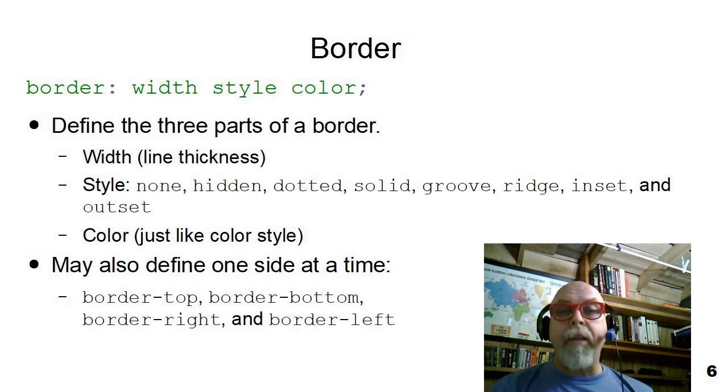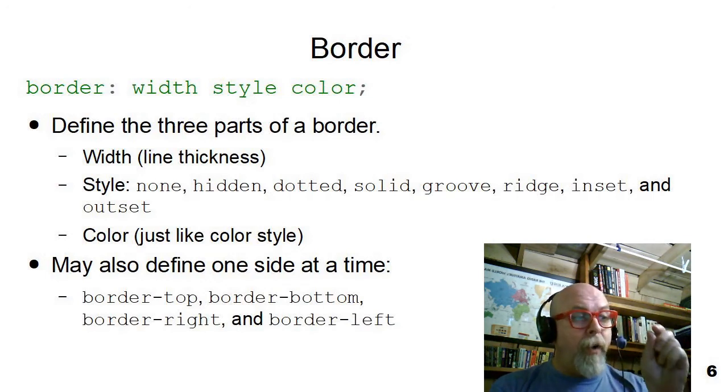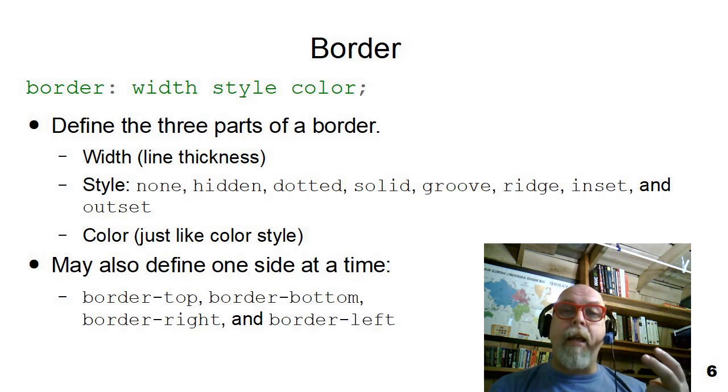The next style in the box model that I want to talk about is the border style. When you create a border, you have to define three parts of the border. First, you have to define how wide you want that border to be. Second, you define the style of the border. What kind of border do you want around the element? And then you need to specify the color of that border. So, the three parts are width, line thickness, and style.